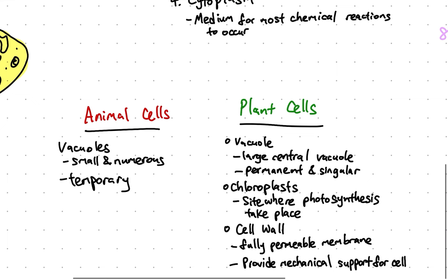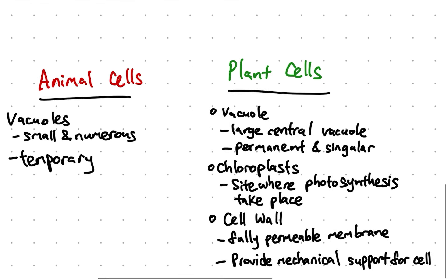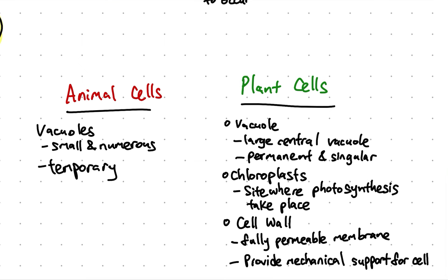Now let us take a look at the difference between the organelles found in the animal cell and the plant cell. Both animal cells and plant cells have a vacuole, but it differs. Animal cells have small and numerous but temporary vacuoles, while plant cells have a large central vacuole which is permanent. Both vacuoles store water, minerals, nutrients and enzymes.